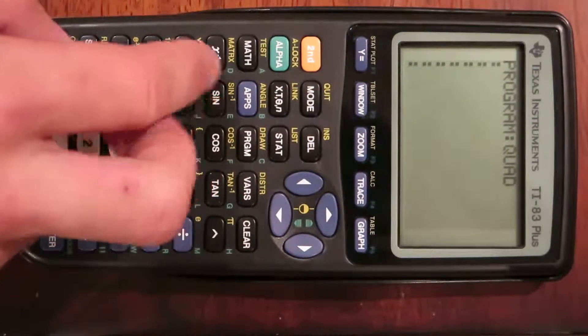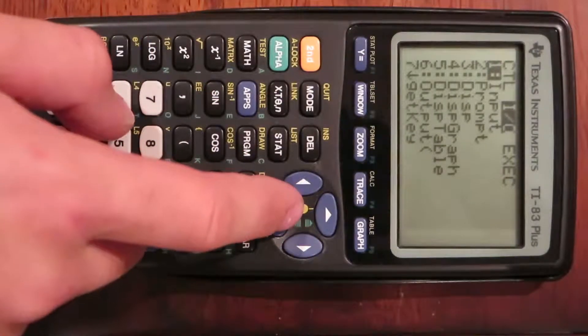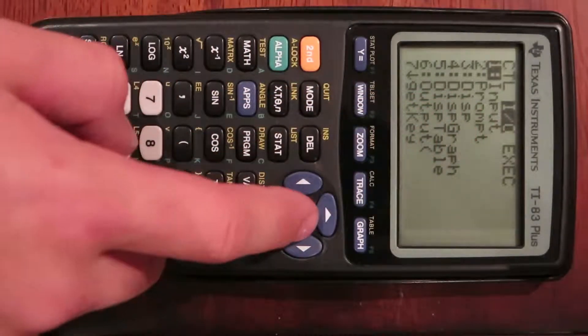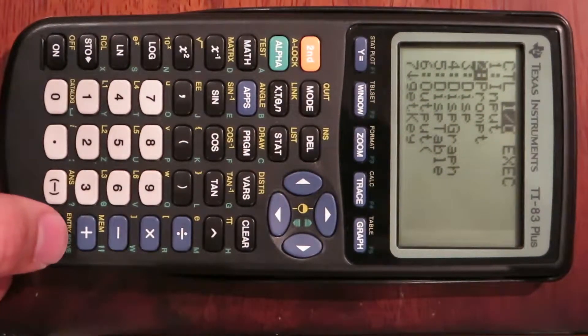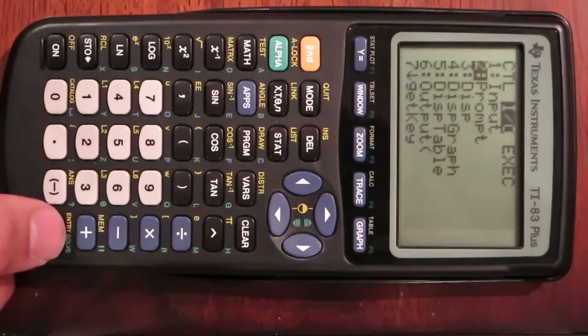The first step is to go to program again, go over to input output. You can either go to input or prompt, but prompt is better because when you're typing in the formula you'll see A, B, and C, so you can actually know what you're typing in.